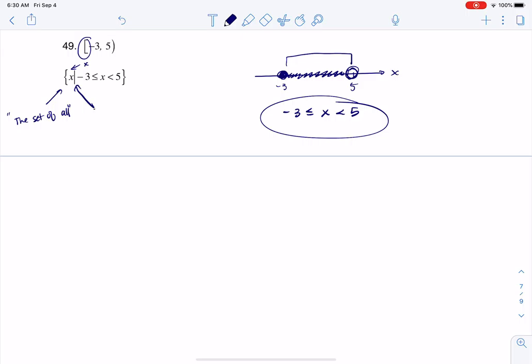So we're saying that, hey, if this is my interval, it's really the set of all x values such that x is between, I should say, negative 3 inclusive and 5 exclusive. And so that's set builder notation.